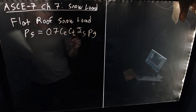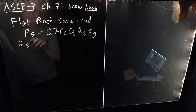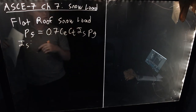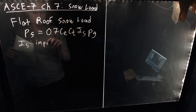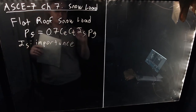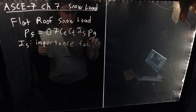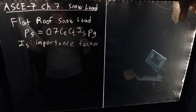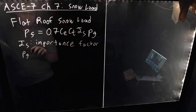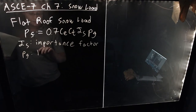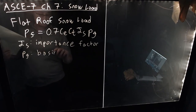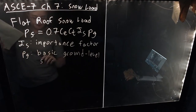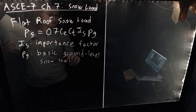A few of these things — well, one of these things we already know. IS is our importance factor, specifically the importance factor for our building type for snow. If you want to learn more about that, you can check out the previous video in this playlist. PG is our basic ground level snow value, and this is in pounds per square foot.